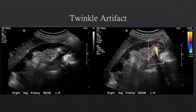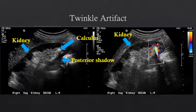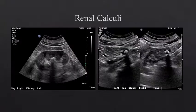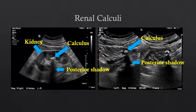Another trick to differentiate renal sinus fat from calculi is Doppler ultrasound. When we apply Doppler ultrasound onto a suspected calculus in the midst of hyperechoic renal sinus fat, we see a twinkle artifact — a very bright area of aliasing — that gives us high confidence that this is a renal calculus. Here are additional examples showing the calculus with posterior acoustic shadowing, confirming it is not just echogenic fat but an actual calculus.